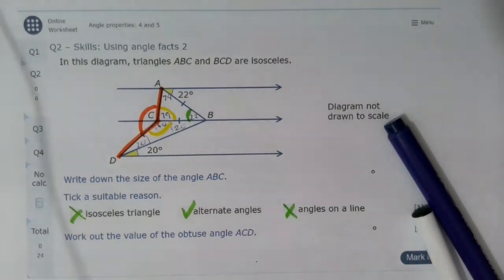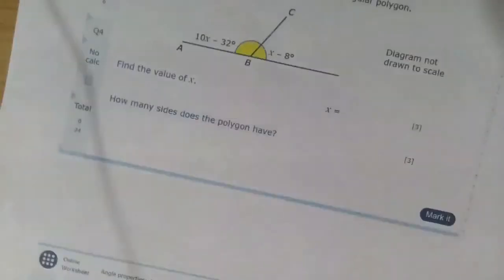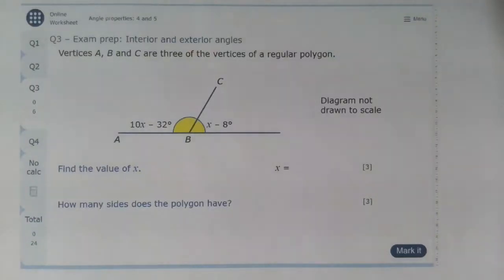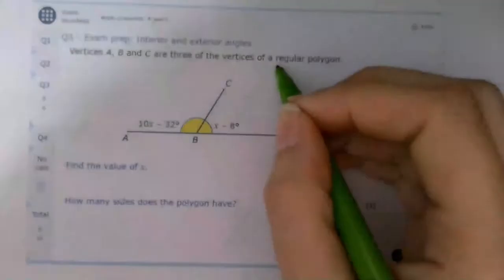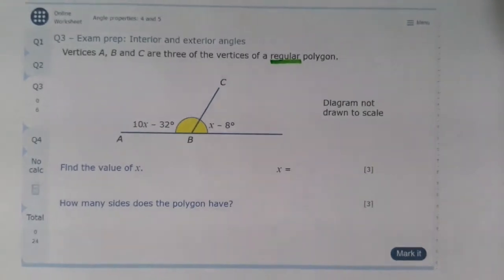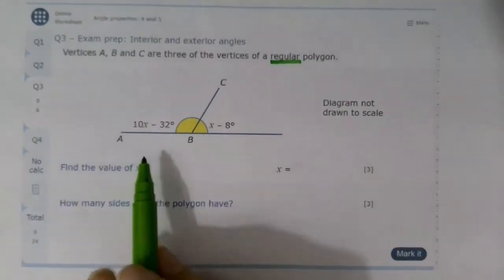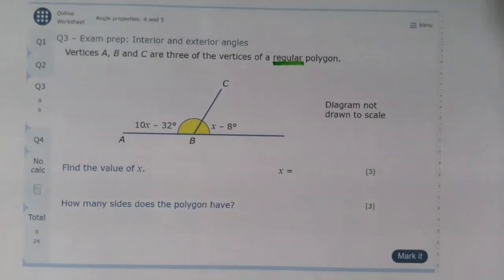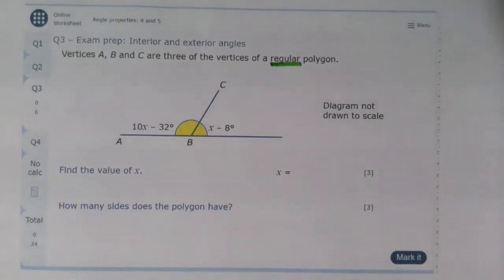This question is using the fact that we've got a regular polygon. Regular is the important word here. Remember, that means all of the sides and all the angles are equal. Now the first thing we want to do is find the value of x. We've been given an interior and the exterior angle, and it doesn't actually matter that they're part of the polygon. All that matters is that they're on a straight line, and we know that angles on a straight line add up to 180 degrees.